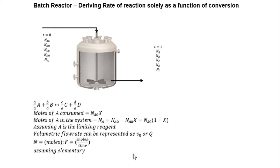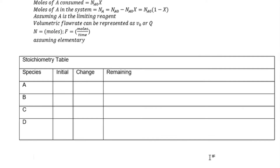Let us draw a stoichiometric table, which reminds me of the ICE table — just a little bit. This stoichiometric table should present the initial, change, and the remaining. For the stoichiometric table, we can positively say we know the initials for all our subscripts.